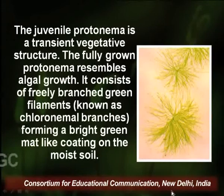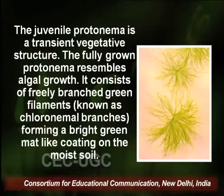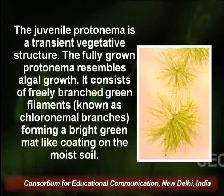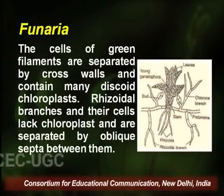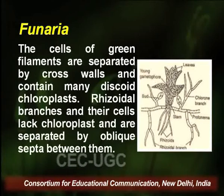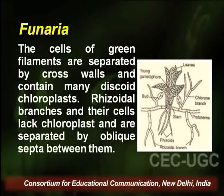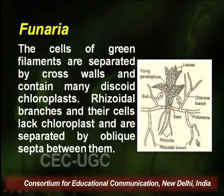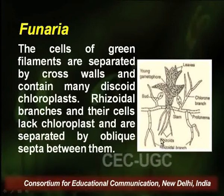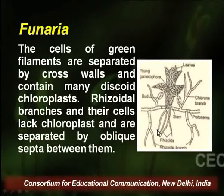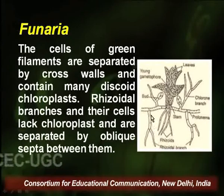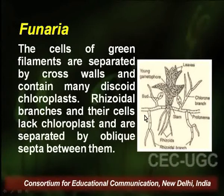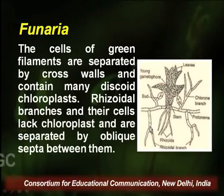The protonema consists of freely branched green filaments known as chloronemal branches, forming a bright green mat-like coating on moist soil. The cells of the green filaments are separated by cross walls and contain many discoid chloroplasts. The rhizoidal branches lack chloroplasts and are separated by oblique septa. In the diagram, some branches grow downwards, termed rhizoidal branches.